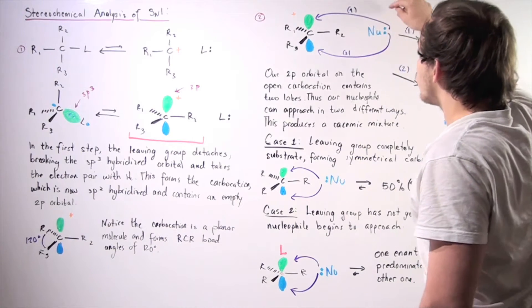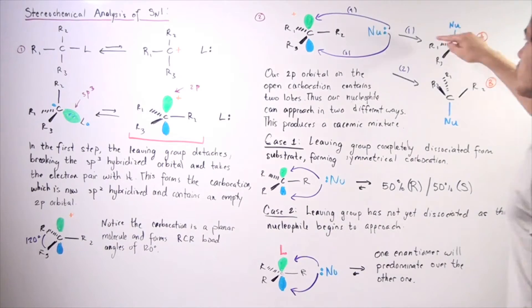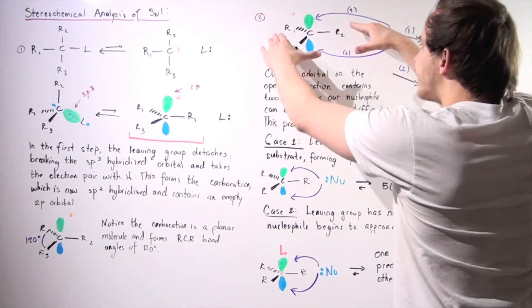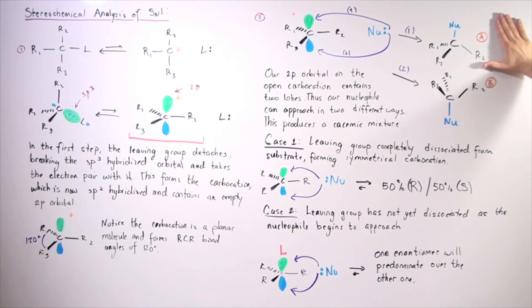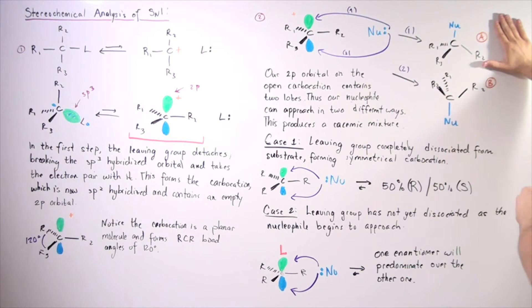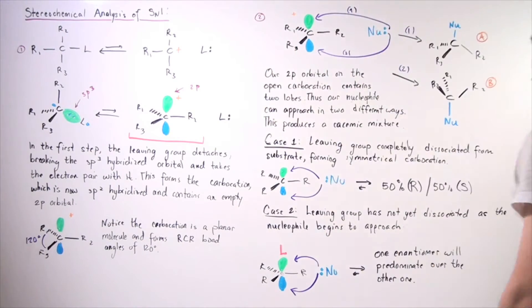When pathway one occurs, we get the following compound. When nucleophile attaches from the top, all these R groups bend downward, forming the following molecule, and when the nucleophile uses its pair of electrons to attack from the bottom, our R groups bend upward, and we form the following product, product B.